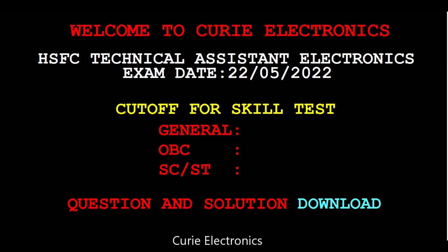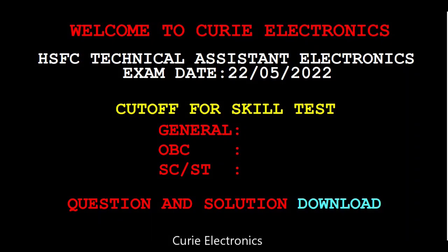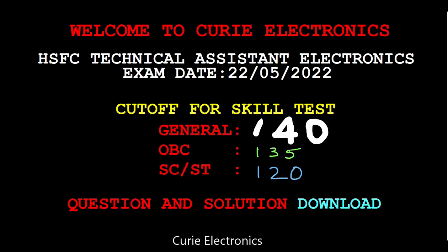I feel whoever cleared this exam, they might have done BE or MDEC as well as Diploma in Electronics. So the cutoff for general category is going to be 140 marks. And for OBC, it should be 135. Maybe a slight variation, that's all. For SC/ST, it is going to be 120 marks for the skill test.